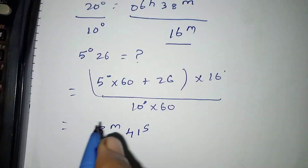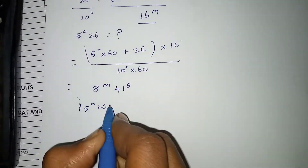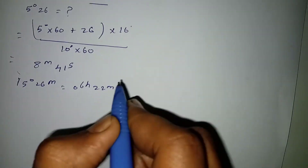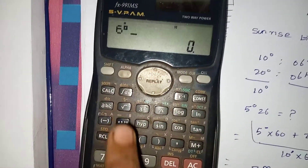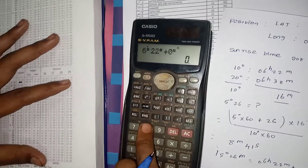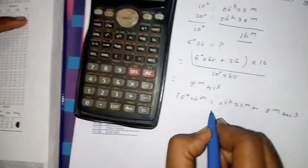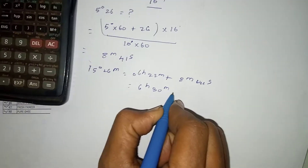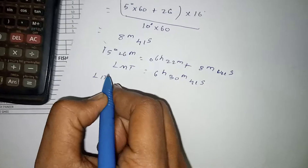41 seconds. 10 degrees into 6 hours 22 minutes; 15 degrees into — plus, add 15 degrees into 6 minutes 0. So 6 hours 22 minutes plus 8 minutes 41 seconds, equals 6 hours 31 minutes 41 seconds. This is the local mean time. This is longitude in time.